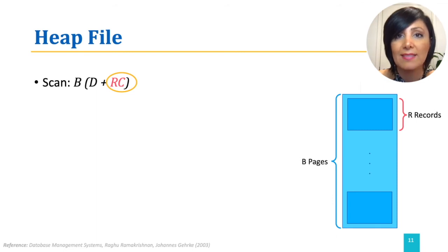Note that, as we discussed, R times C is orders of magnitude smaller than B times D. Therefore, in the estimate, we can only use the B times D for a search with equality selection.